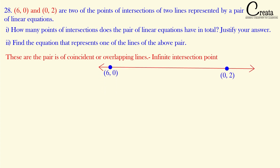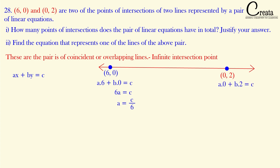Let's use the general equation of a line: ax + by = c. Starting with the first point (6, 0), we put x = 6 and y = 0. On solving, we get the value of a as c/6. Using the second point (0, 2), where x = 0 and y = 2, we put it into the general equation and get 2b = c, so b = c/2.